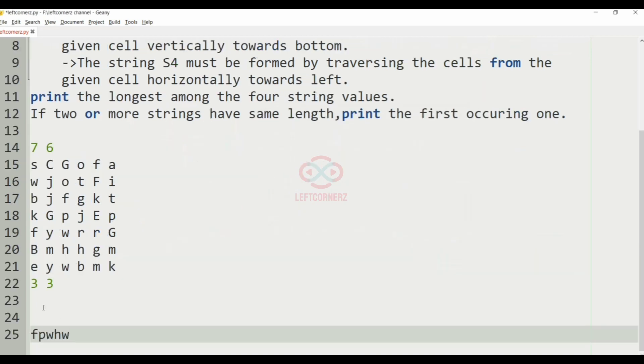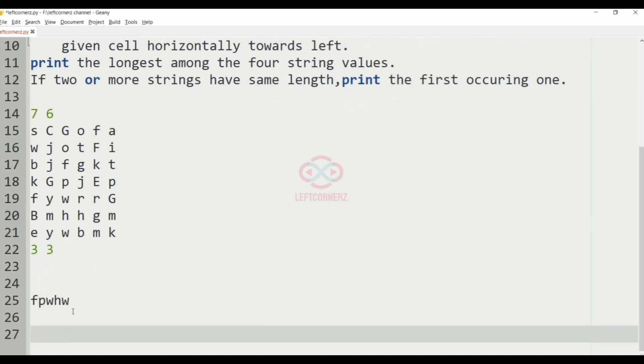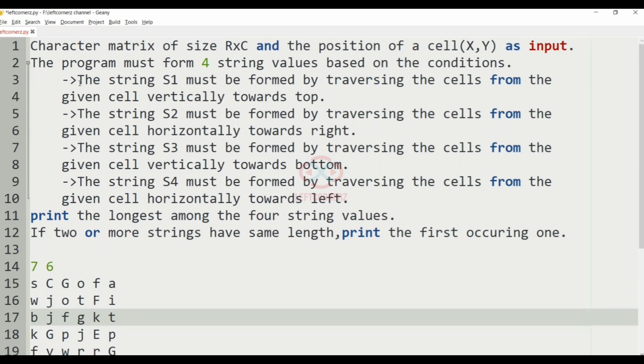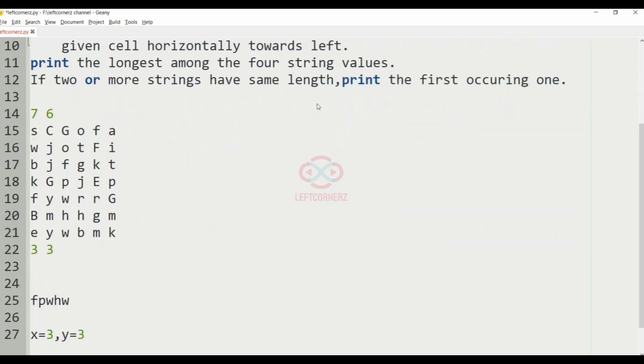So in this test case, we have a 5 cross 6 matrix where the X is 3 and Y is also 3. So now we can see that this element is specified, that is 3 comma 3 is F. Now the string S1 must be formed by vertically towards top to this cell, that is F O G.